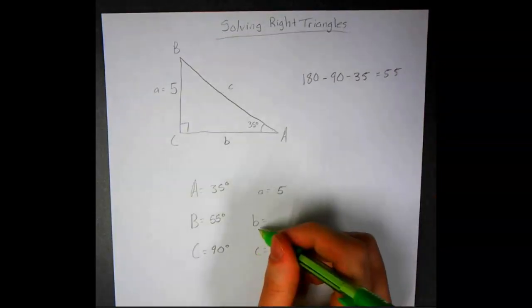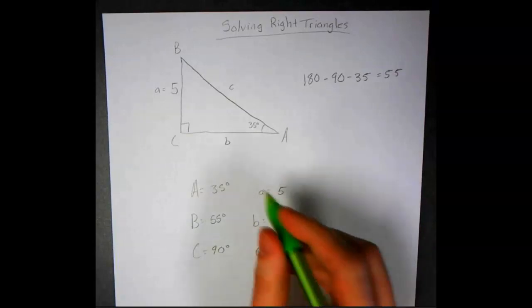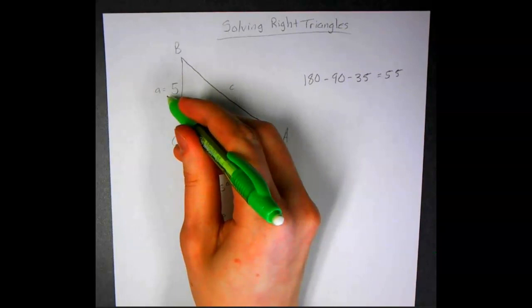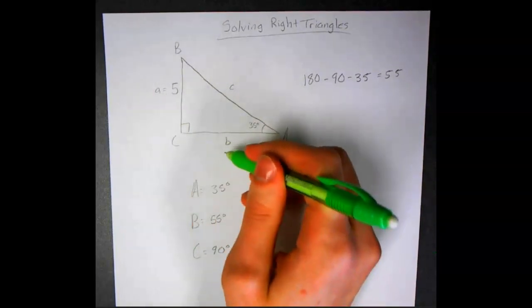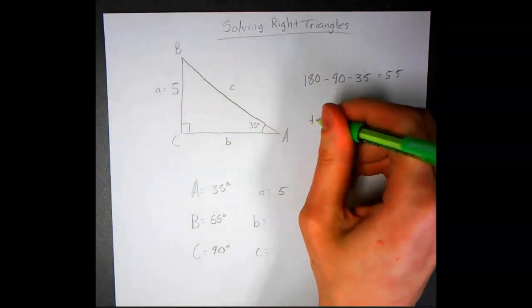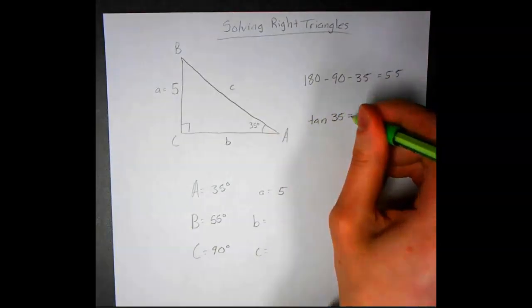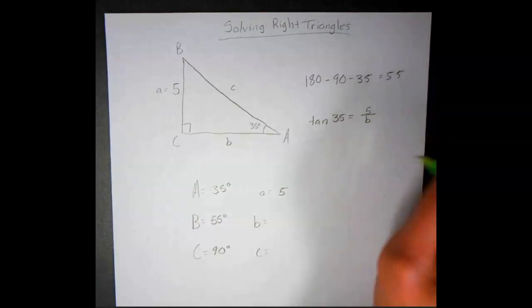Next, we're looking for side B. We want this one right here. We have side A, the opposite side, and we want the adjacent side, so we'd be looking at tangent. Right now we know tangent of 35 equals 5 over side B.